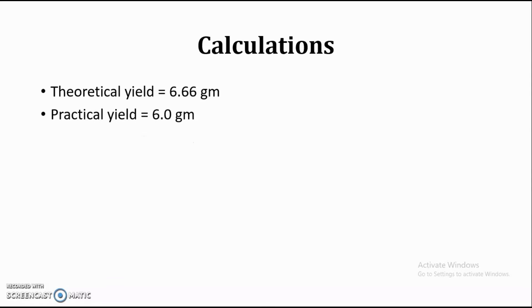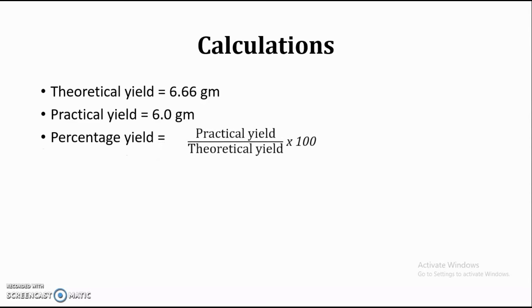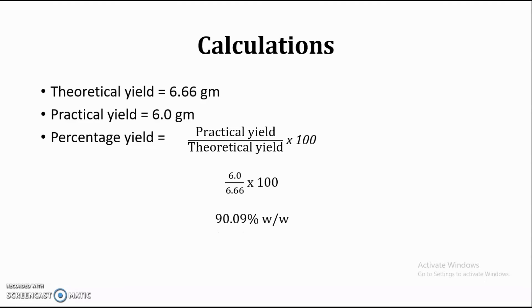Suppose after completion of the practical, we obtained a practical yield of 6 grams — this is the weight of product obtained after complete drying. Then we calculate the percentage yield using the formula: percentage yield = (practical yield / theoretical yield) × 100 = (6 / 6.66) × 100 = 90.09% w/w. So, this is the percentage yield of our product.